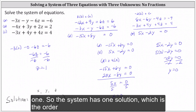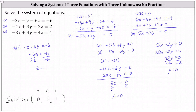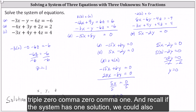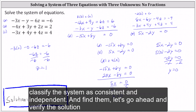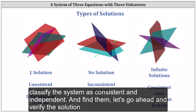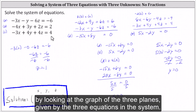So the system has one solution, which is the ordered triple zero, zero, one. Recall if the system has one solution, we could also classify the system as consistent and independent. Finally, let's verify the solution by looking at the graph of the three planes given by the three equations in the system.